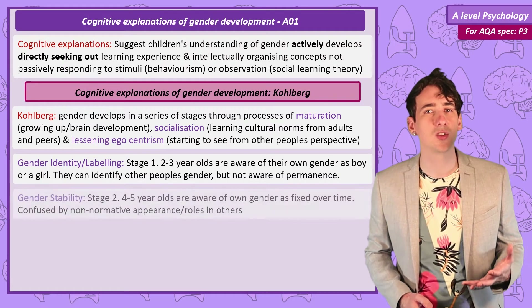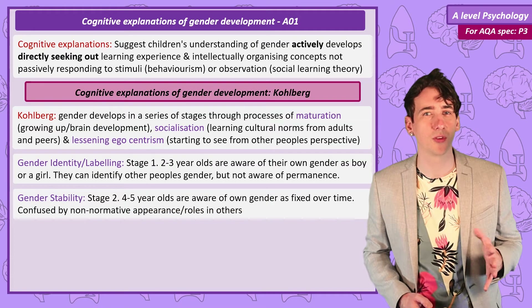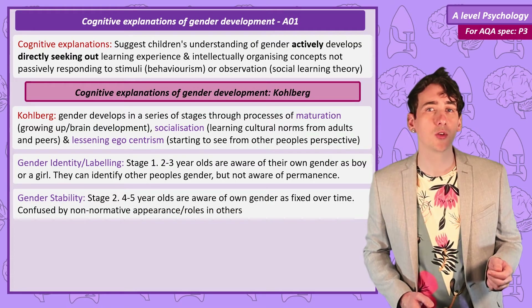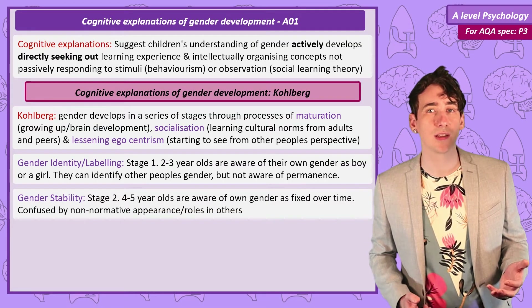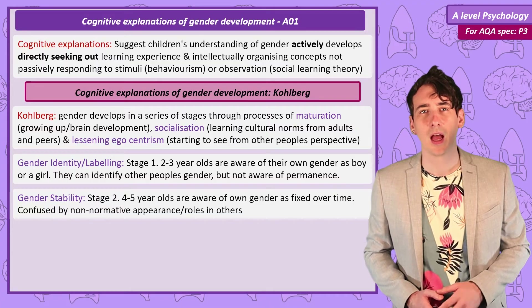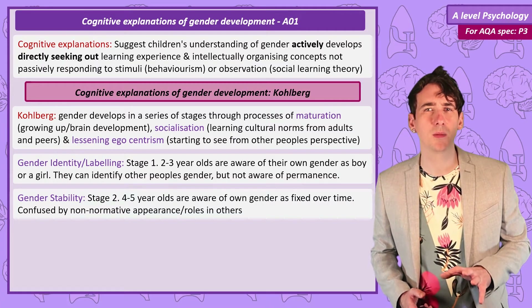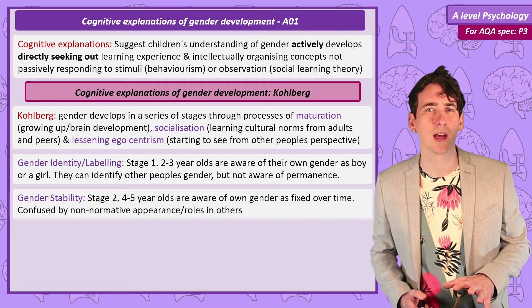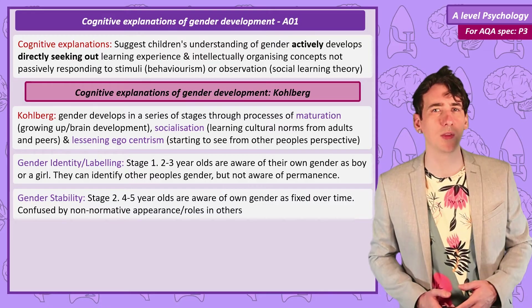In the second gender stability stage, around 4 to 5, children start to become aware that their own gender is fixed over time, and will start to be confused by gendered appearances that are non-normative in the people around them.